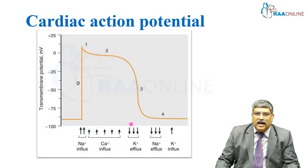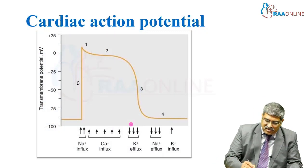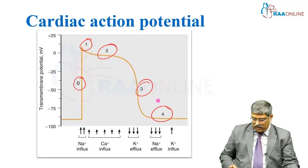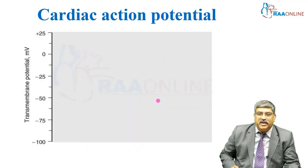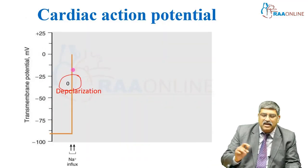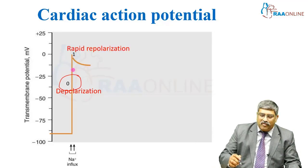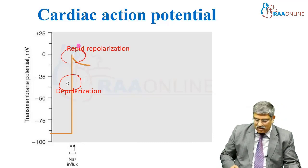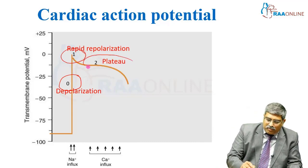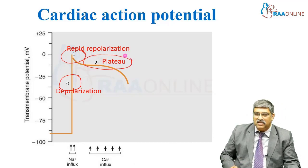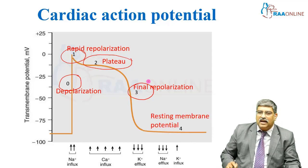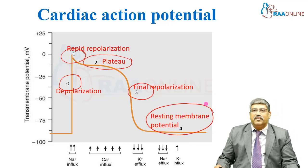Coming to action potential — it has five phases: phase 0, phase 1, phase 2, phase 3, and phase 4. Phase 0 is depolarization. Phase 1 is rapid repolarization and phase 2 is the plateau phase. Phase 3 is the final repolarization, and resting membrane potential is phase 4.